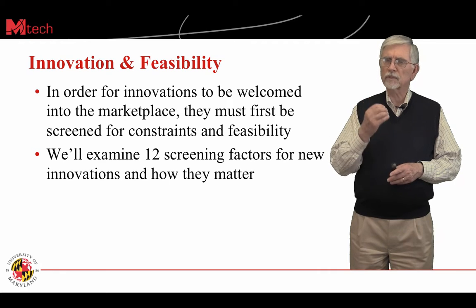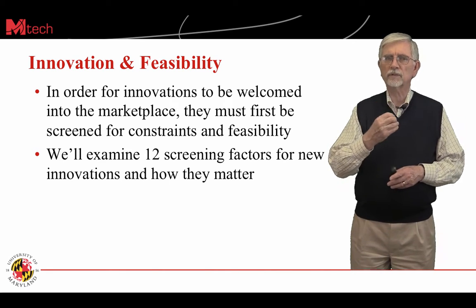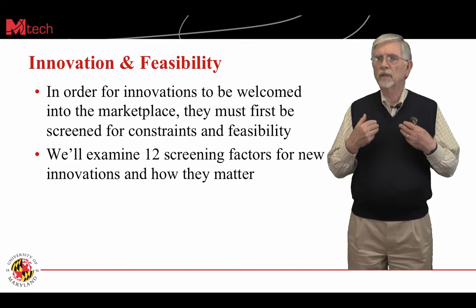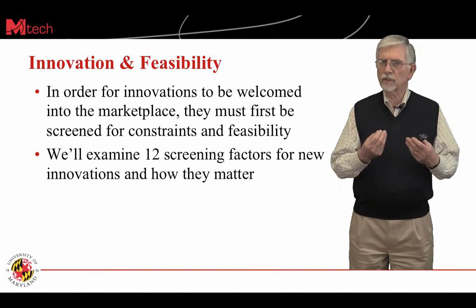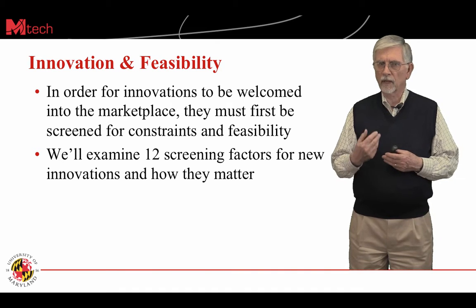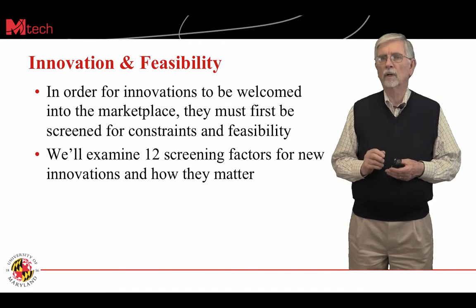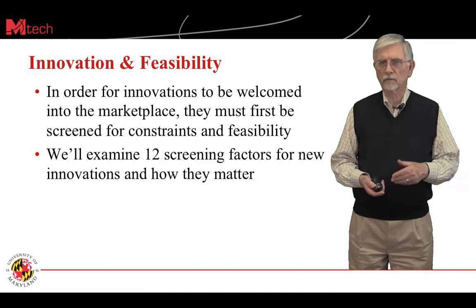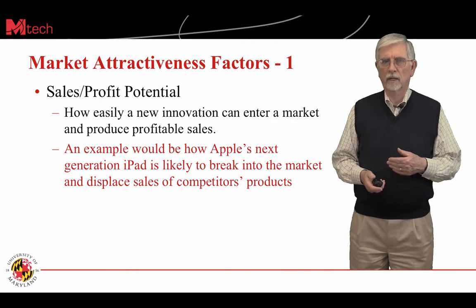The reason we're doing this is that innovations need to be welcomed into the marketplace if they're feasible. If they can be screened for constraints, then people will know what to expect in the marketplace. So we're going to take a look at these 12 factors.